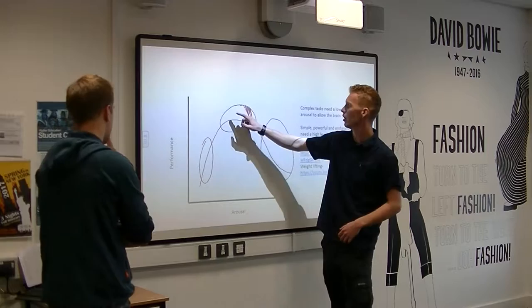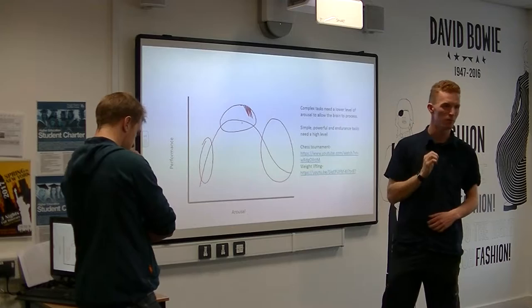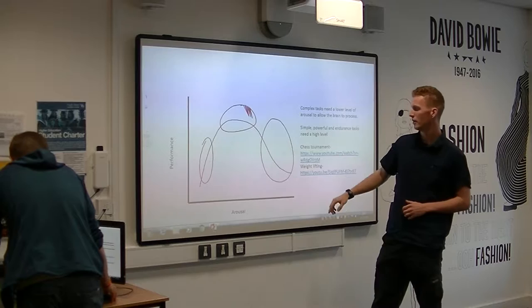You need to be in the top area - the optimal performance zone. This is where you're just amped enough to be able to perform, but with a clear head so you can think about what you're doing. The U theory changes depending on who it's applied to.